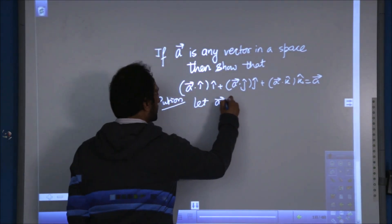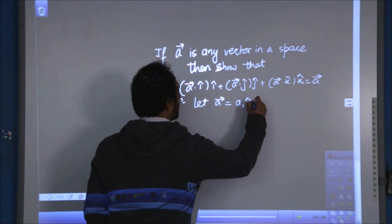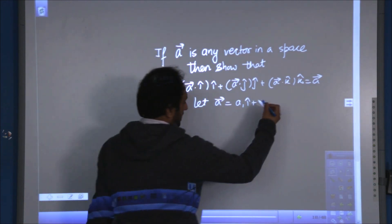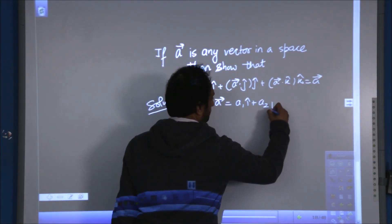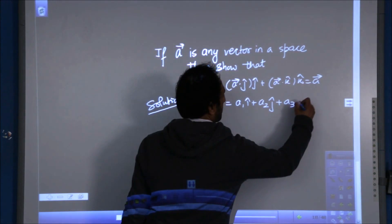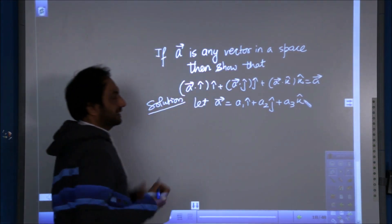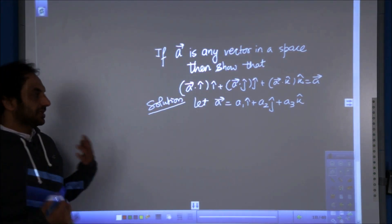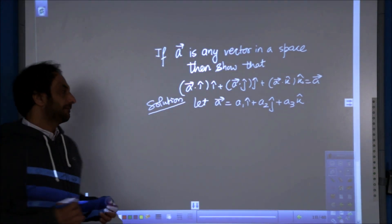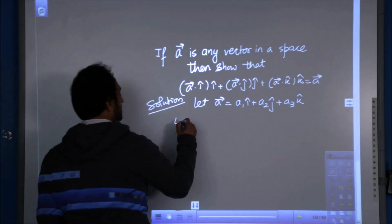Let a vector equals a1i, I am taking its components. So let a vector be a1i plus a2j plus a3k and now the left hand side.